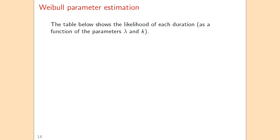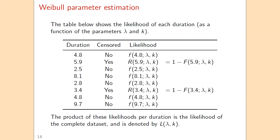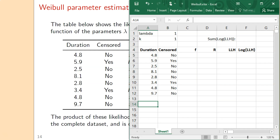For each duration we determine the likelihood as a function of the parameters lambda and k. For event durations, the likelihood is given by the density function; for censored durations, by the reliability function, which is 1 minus the distribution function. If we then multiply all those likelihoods, we have the likelihood of the complete dataset as a function of the parameter values lambda and k. We can then maximize this likelihood by finding the best values of lambda and k.